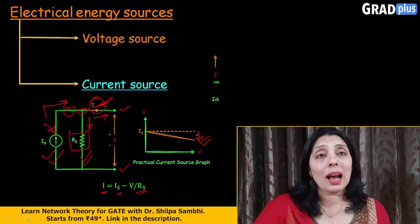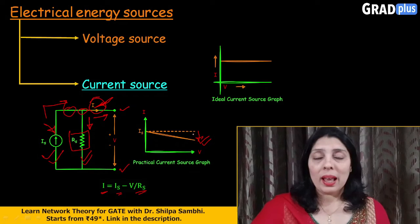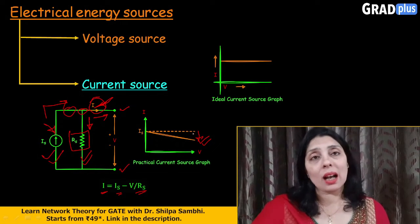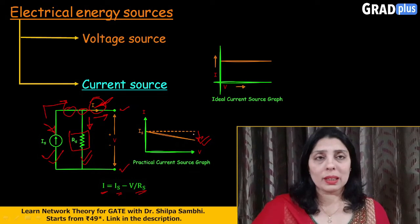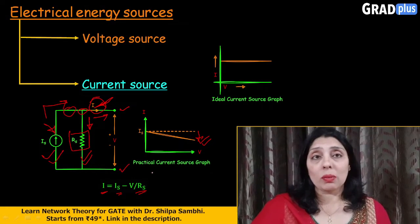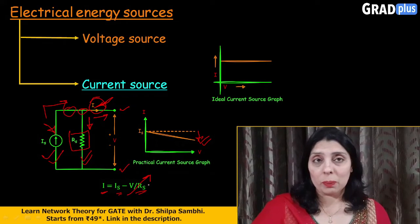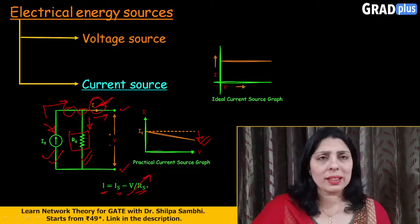Now, what is the ideal current source here? If, by chance, we say that the value of resistance Rs is very large, in that case, what will happen? V by Rs will become a very small value. Why it will become a very small value? Because it is V divided by Rs. If Rs is a large value, then the reciprocal of a large value will be a very small value, which is totally offered by this entire fraction here.